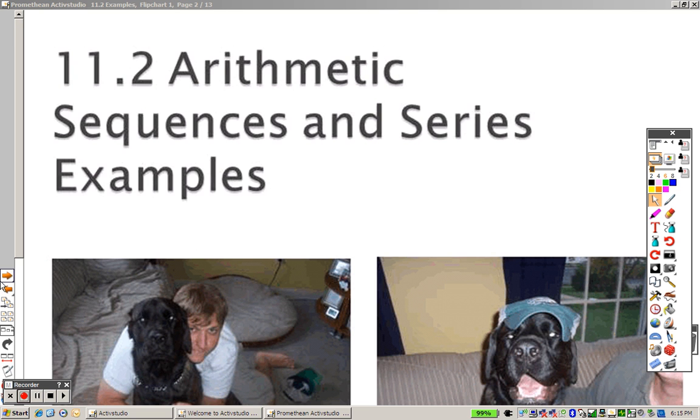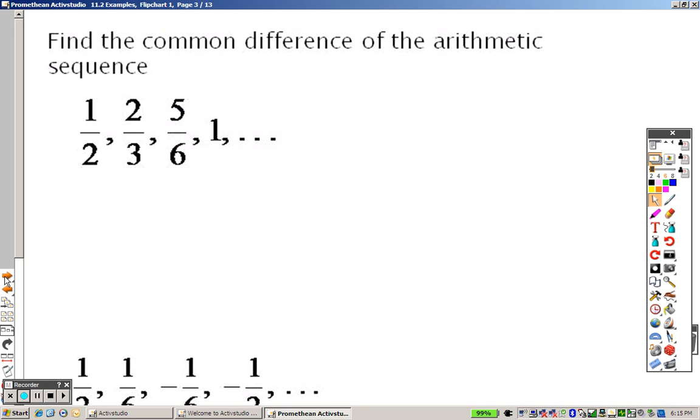All right, 11.2, the arithmetic sequences and series examples. The first thing basically says find the common difference. The common difference is pretty simple. That's your d. So find d is what it's saying. So what is it going up or down by every single time?